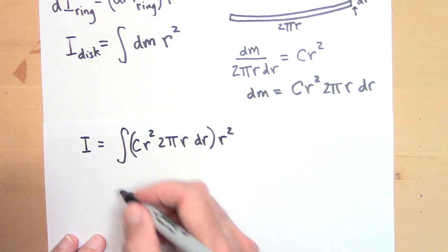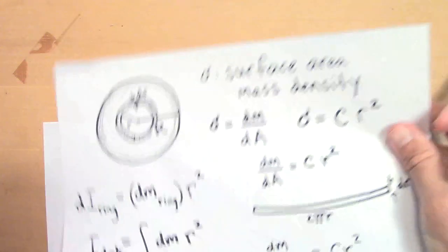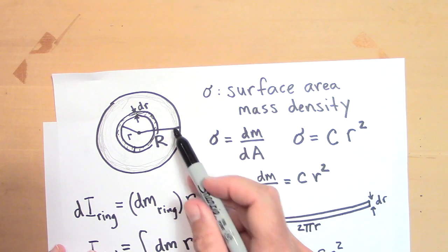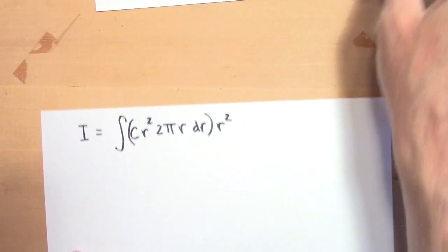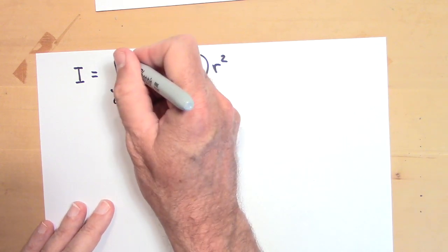And I'm going to integrate, I'm going to tell it to start adding it at r equals zero and don't stop adding until you get to little r equals capital R. So I'm going to say r equals zero to capital R.